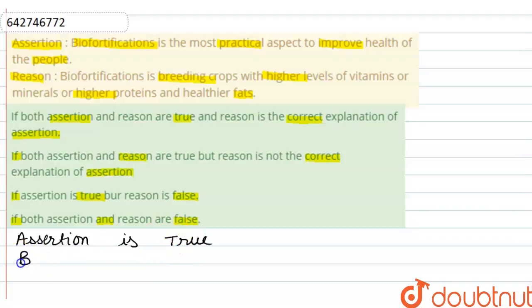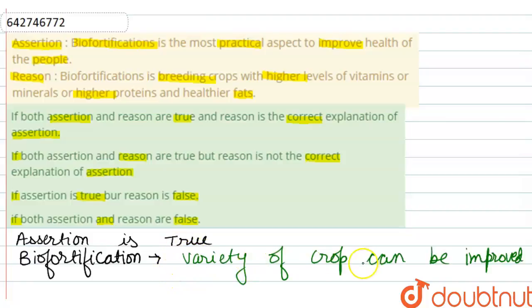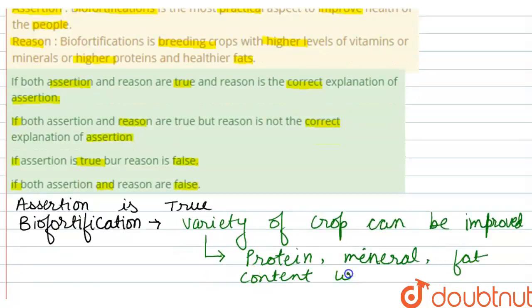How it can be possible? Because of biofortification, variety of crop could be improved. How this can be done? In the variety of the crop, we can say that their protein, mineral, fat content will improve.